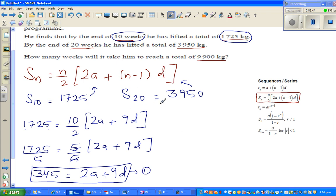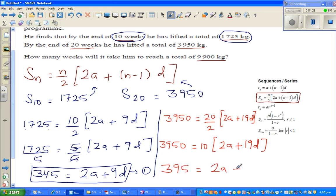Now for equation 2, let me use green. S_20 is 3950, so 3950 equals 20 over 2 times 2a plus 20 minus 1, which is 19d. So 3950 equals 10 times 2a plus 19d. If you divide both sides by 10, 395 equals 2a plus 19d. This is equation number 2.